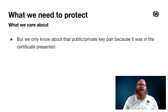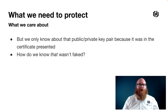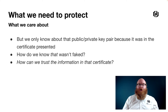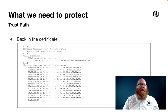But we only know about that public-private key pair because it was in the certificate presented. How do we know that wasn't faked? What's to stop someone from creating a certificate that claims to be www.hashicorp.com, with a public key corresponding to a private key they made up, and start handing it around? How can we trust the information in a certificate presented to us? Well, if we look back in the certificate, we see information about the certificate's issuer, the signature over that certificate, and the authority's key identifier — all clues on how TLS works to prove that certificates are valid.